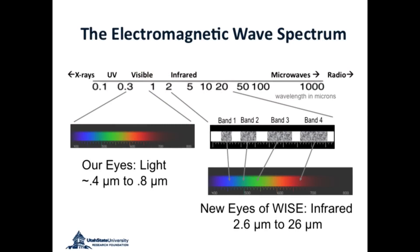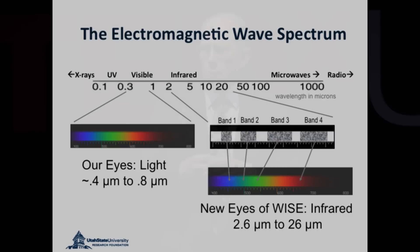What do I mean by new eyes? Our eyes are sensitive to only a very narrow portion of the electromagnetic spectrum. The wavelengths that are shorter than what we can see are the ultraviolet, the x-rays, and gamma rays. Wavelengths longer than what we can see we call the infrared, microwaves, and radio waves. But they're all part of the same type of energy — we just can't see them with our eyes.